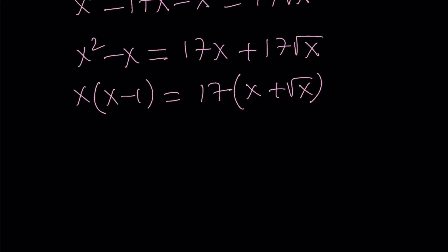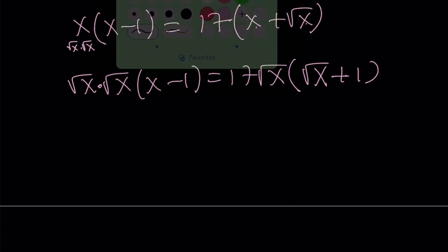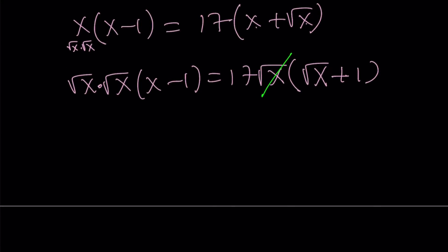For example, x plus square root of x has square root of x as a common factor. And x can be written as square root of x times square root of x. Therefore, it has the same thing. So we can kind of take out a square root of x and write it as this. And then on the right-hand side, we can kind of take out square root of x. And we can write the inside as square root of x plus 1.